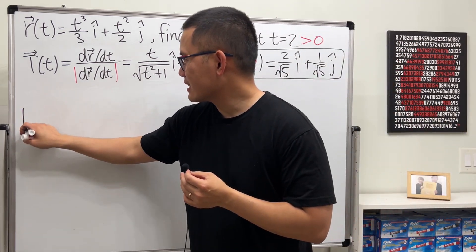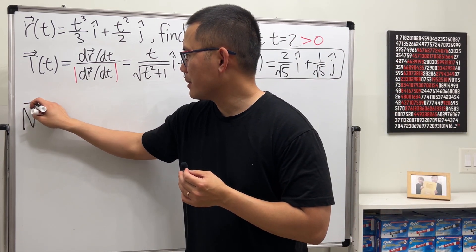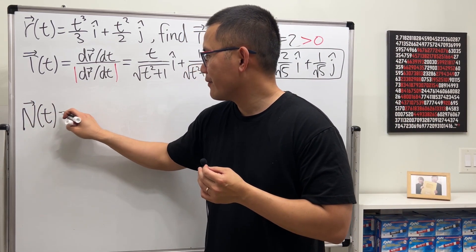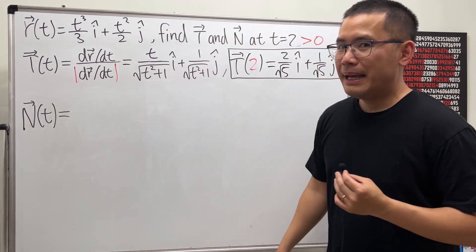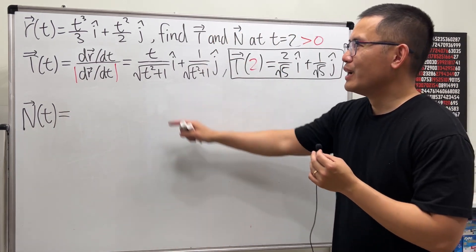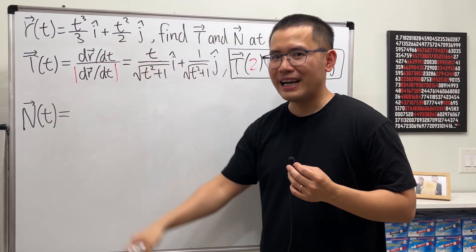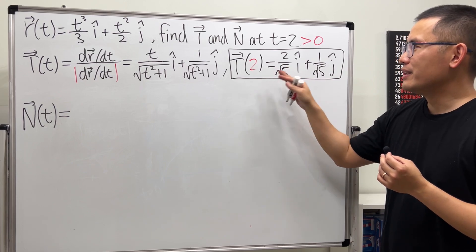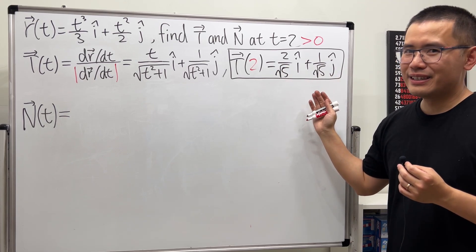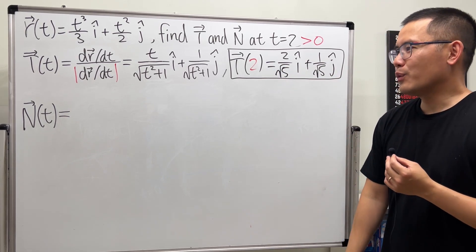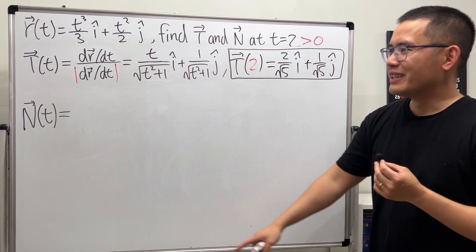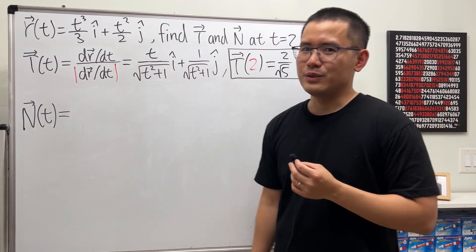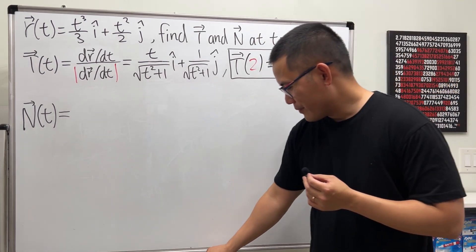Next, let's talk about the unit normal vector. Because we only have a 2D curve and we've found our unit tangent vector, as long as we understand what's going on, you can actually figure out the unit normal within a minute.